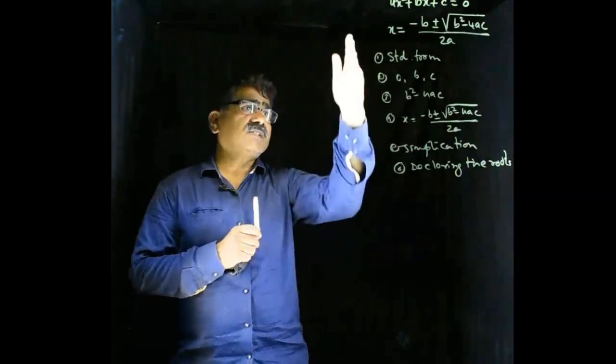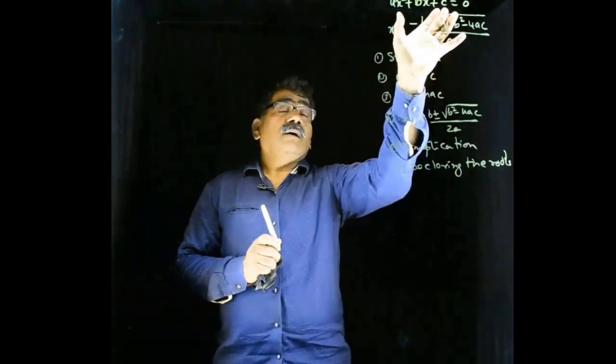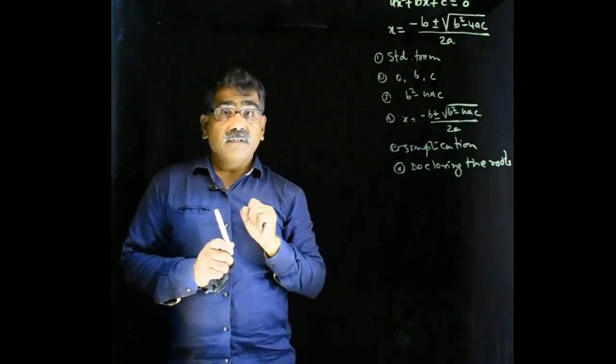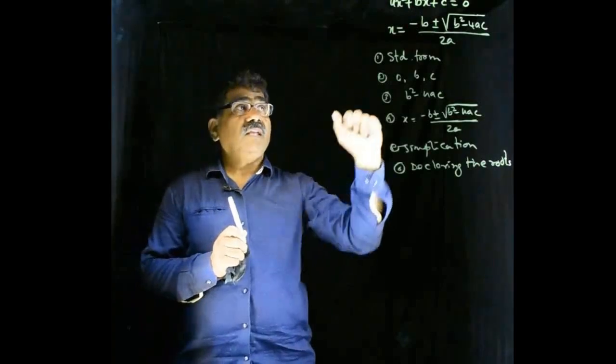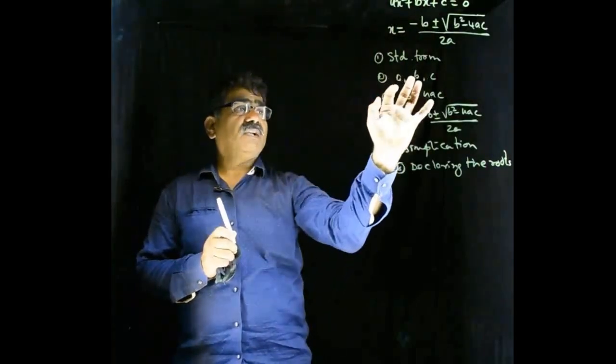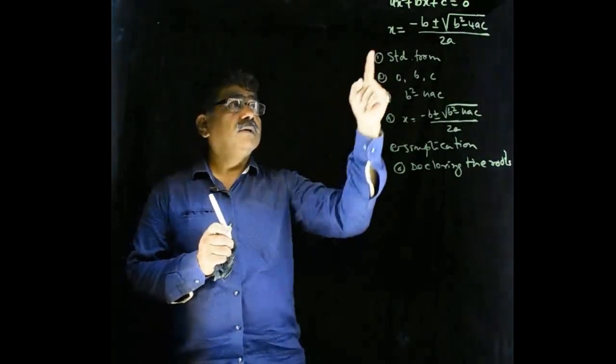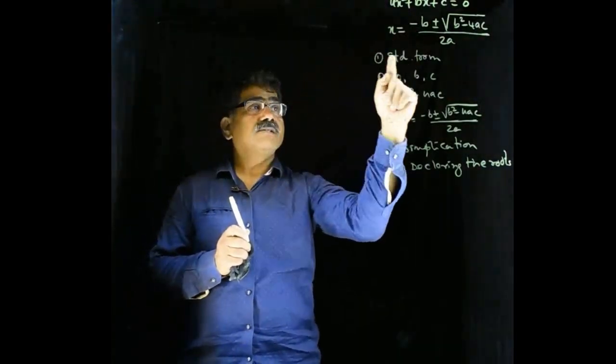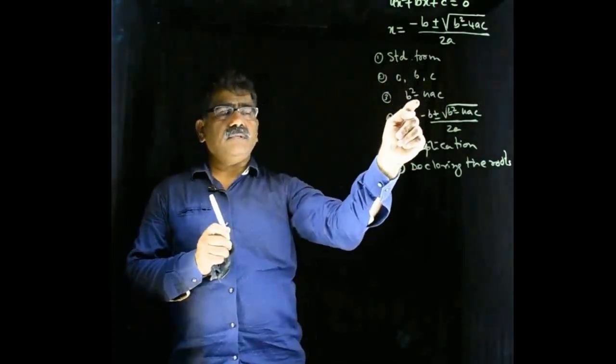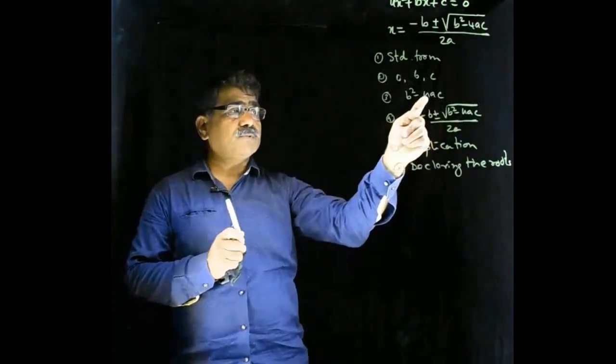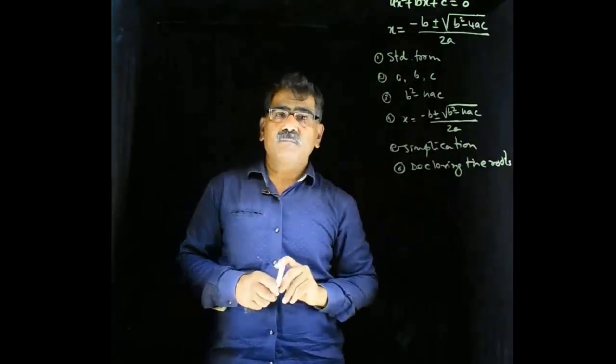Six steps are very important in this method. Get the equation. Check whether it is in the standard form or not. If it is in the standard form, then write values of a, b, c. If it is not in the standard form, write that equation in standard form. Then write values of a, b, c. Then find out b square minus 4ac. Then substitute that value in this formula. Simplify. You will get the roots.